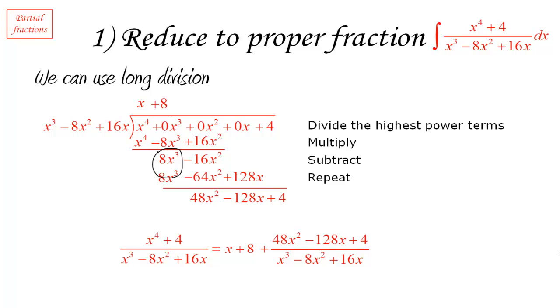So notice that the x and the 8, remember we're trying to integrate this, so the x and the 8 are easy to integrate. So we're left just with the remaining fraction which is now in proper form. The degree at the top is less than the degree at the bottom which is what we want. So we have achieved the reduction to proper fraction.